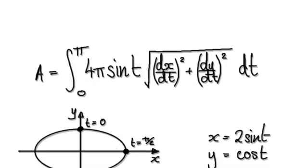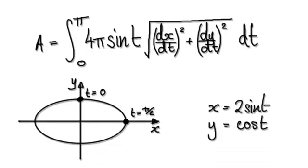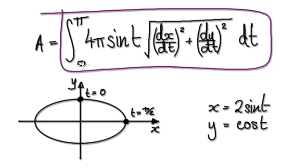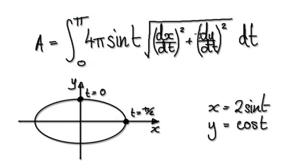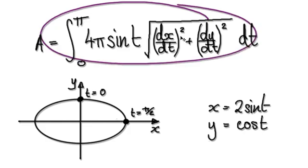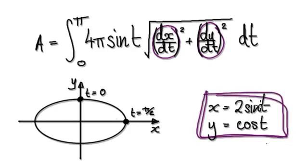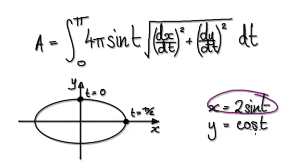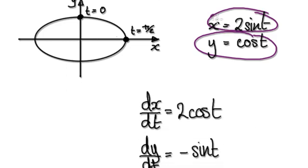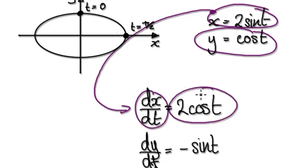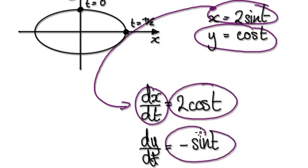Following on from the previous video, in order for us to work out the surface area of an ellipsoid, we would need to evaluate this from 0 all the way to pi. So looking at this, we would need to find dx by dt and dy by dt. So given these parametric equations, we would need to differentiate to find dx by dt and dy by dt. Differentiating gives us dx by dt equals this, and dy by dt equals this.